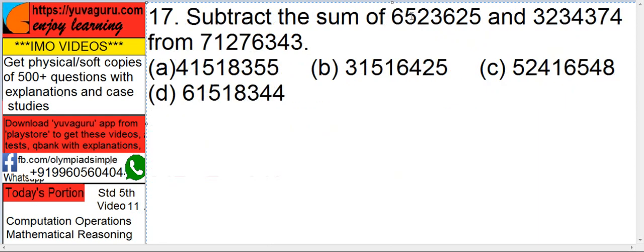Subtract the sum of 6523625 and 3234374 from 71276343. This means we have to add these two numbers and then subtract it from this number, 71276343.